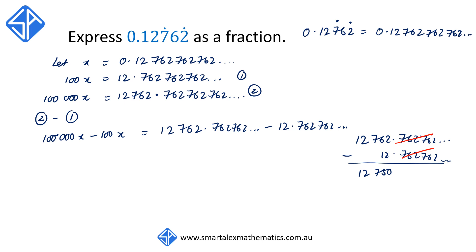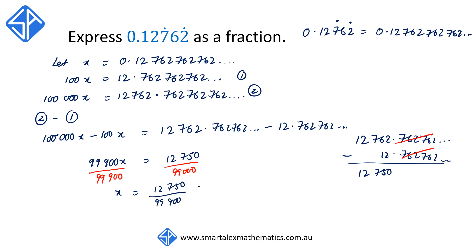So on the left-hand side, 100,000x minus 100x is going to give us 99,900x is equal to 12,750. We then divide both sides by 99,900, so that x is equal to 12,750 over 99,900, and this simplifies to 85 over 666.